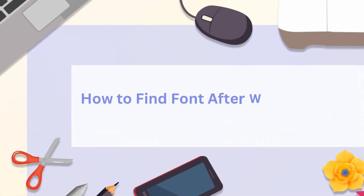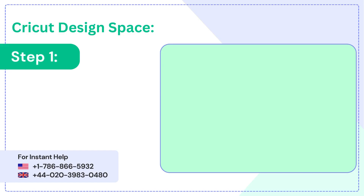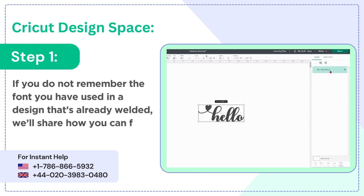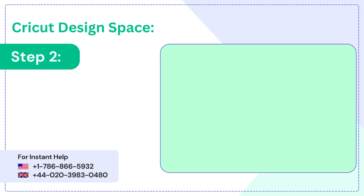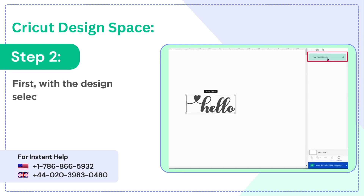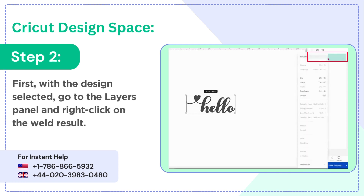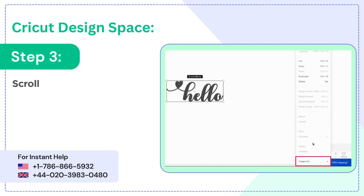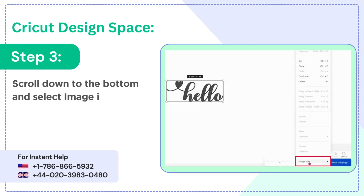How to find a font after welding in Cricut Design Space. Step 1: if you do not remember the font you have used in a design that's already welded, here's how you can find it. Step 2: with the design selected, go to the layers panel and right-click on the weld result. Step 3: scroll down to the bottom and select 'Image Info' and you should be able to see the selected font.